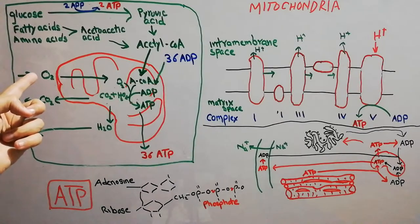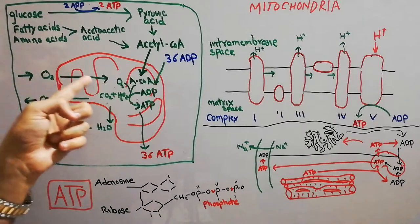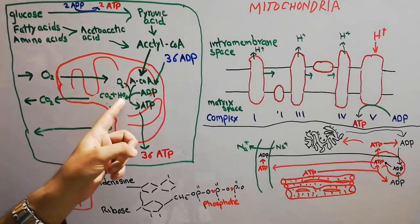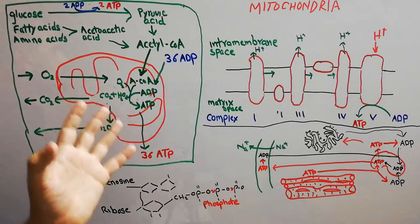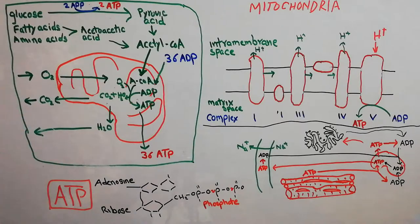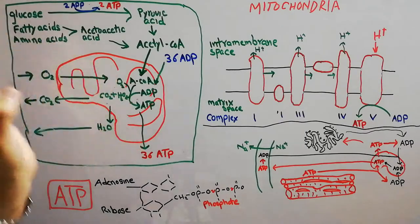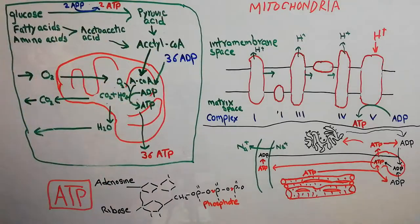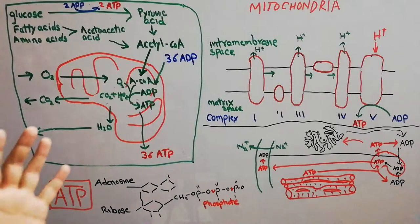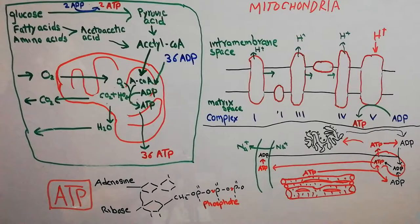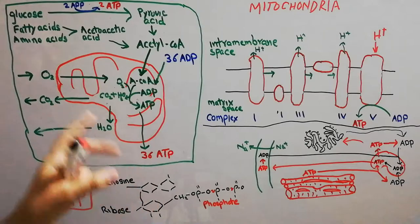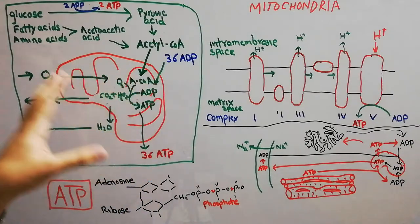Oxygen coming from outside through breathing enters the cell via the blood, and from the cells into the mitochondria. Inside the mitochondria, oxygen combines with the hydrogen and is converted into water. So acetyl CoA is split into hydrogen and carbon dioxide; carbon dioxide is excreted out of the body, while oxygen from the environment combines with hydrogen to form water. In this process a lot of energy is released, with the help of enzymes, in what is known as the Krebs cycle or citric acid cycle.